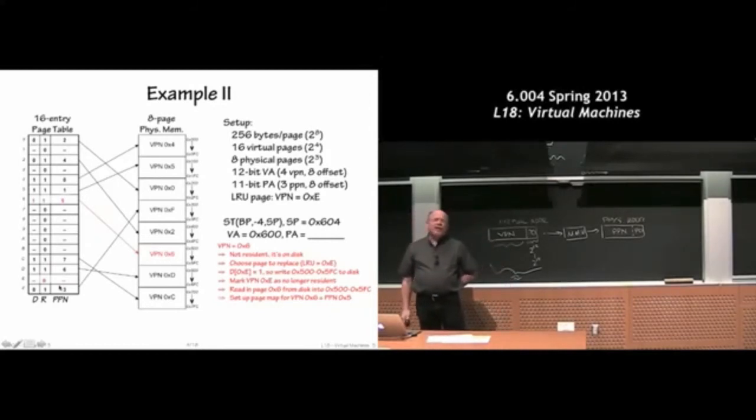So that shows sort of the two things that can happen. Either we succeed right away or we actually have to go through the page fault process to bring in the information from disk and make it available in physical memory and adjust our virtual page table here, adjust the MMU data so that we can now get to that virtual address at its new location. It used to be on disk. Now it's in this case in physical page five.